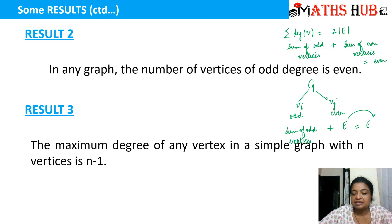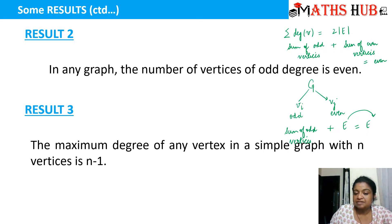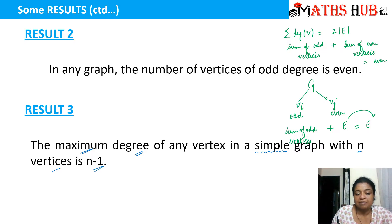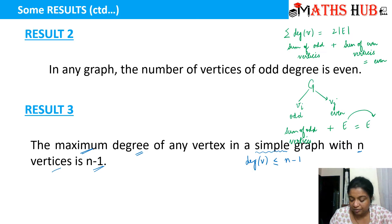The third result says that the maximum degree of any vertex in a simple graph with n vertices is n minus 1. Recall that a simple graph has no self-loops and no multiple edges. So if it is a simple graph with n vertices, then the maximum degree of any vertex is n minus 1, meaning the degree of any vertex is always less than or equal to n minus 1.